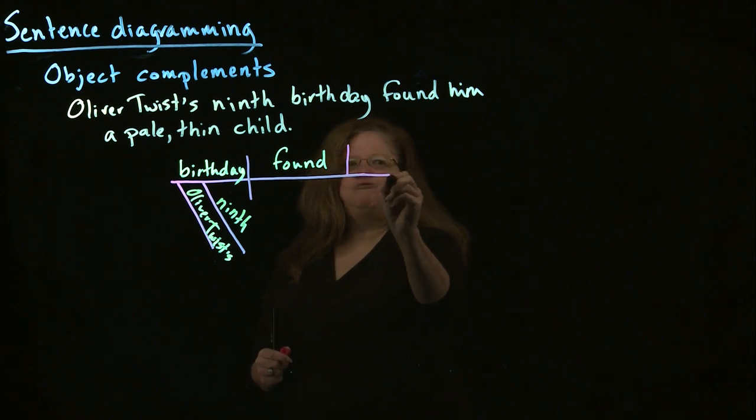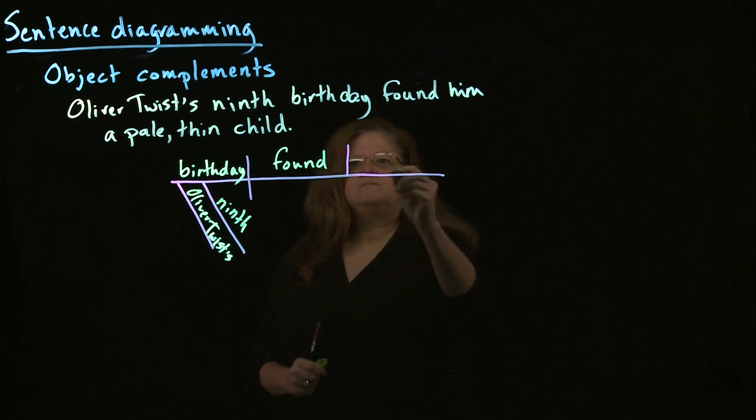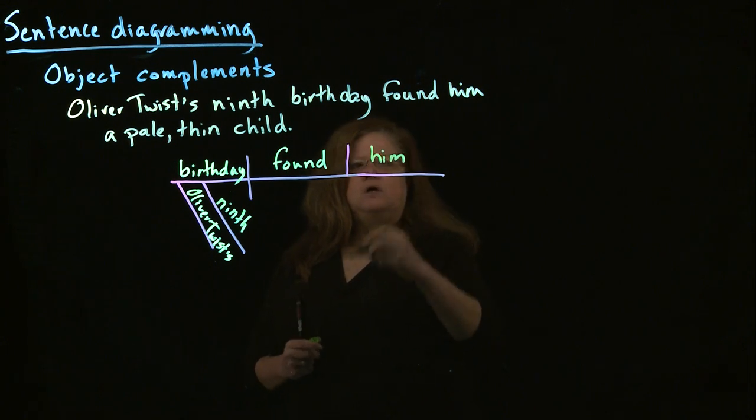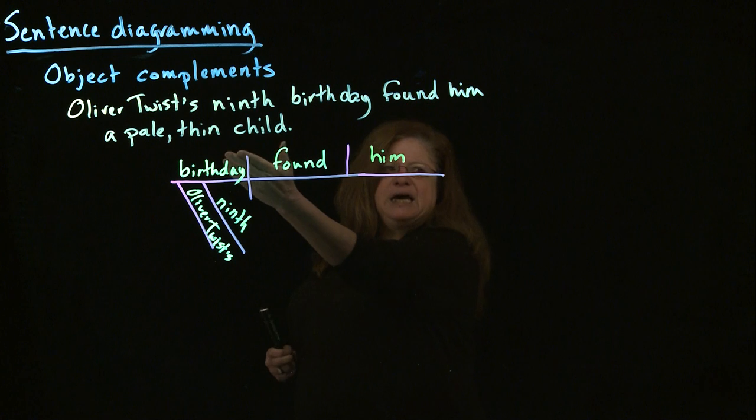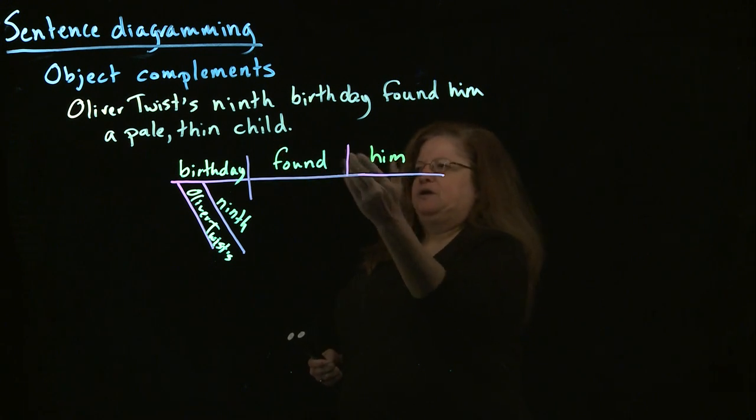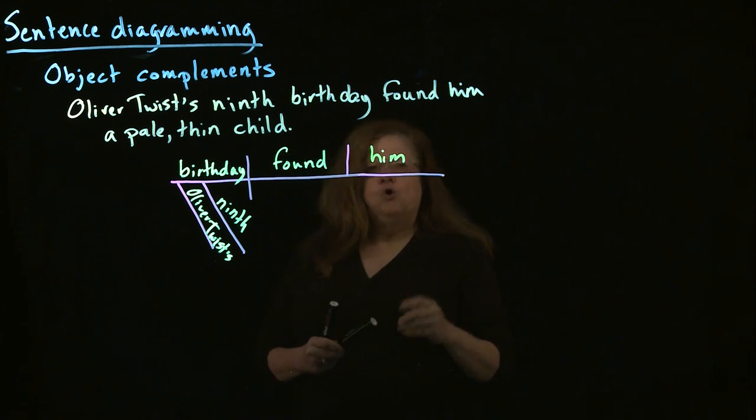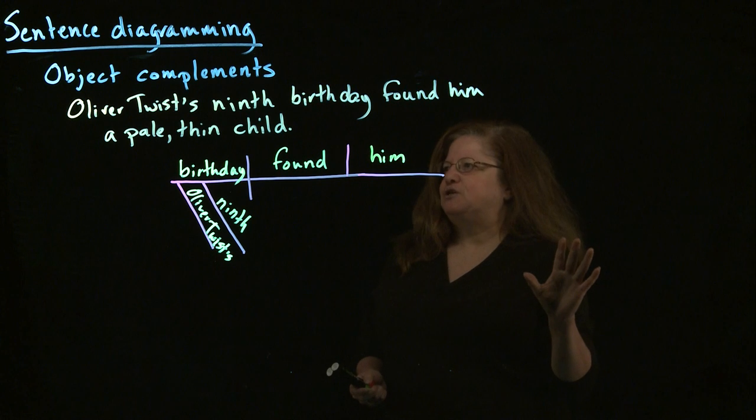And then we have this last little bit here. And this is actually just renaming him. It's describing him in a way. So, we have an object complement.